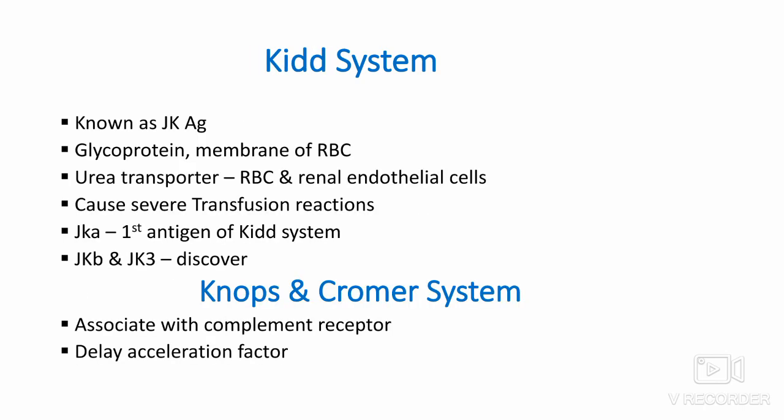Kidd system: The Kidd antigen is also known as JK antigen, a glycoprotein present on the membrane of RBCs. It acts as a urea transporter in RBCs and renal endothelial cells. Kidd antibodies are very rare but can cause severe transfusion reactions. These antigens are defined by reactions to the antibody anti-JKA, which was discovered in the serum of Mrs. Kidd, who delivered a baby with HDFN symptoms. JKA was the first antigen discovered; later JKB and JK3 were also found.